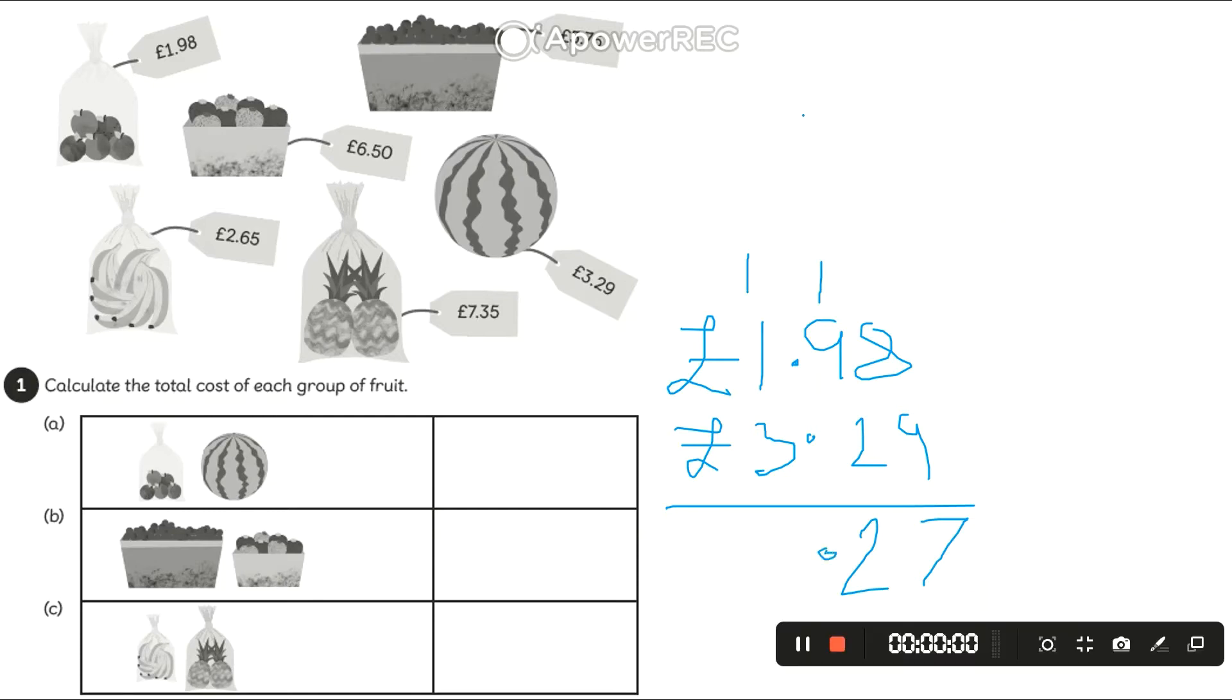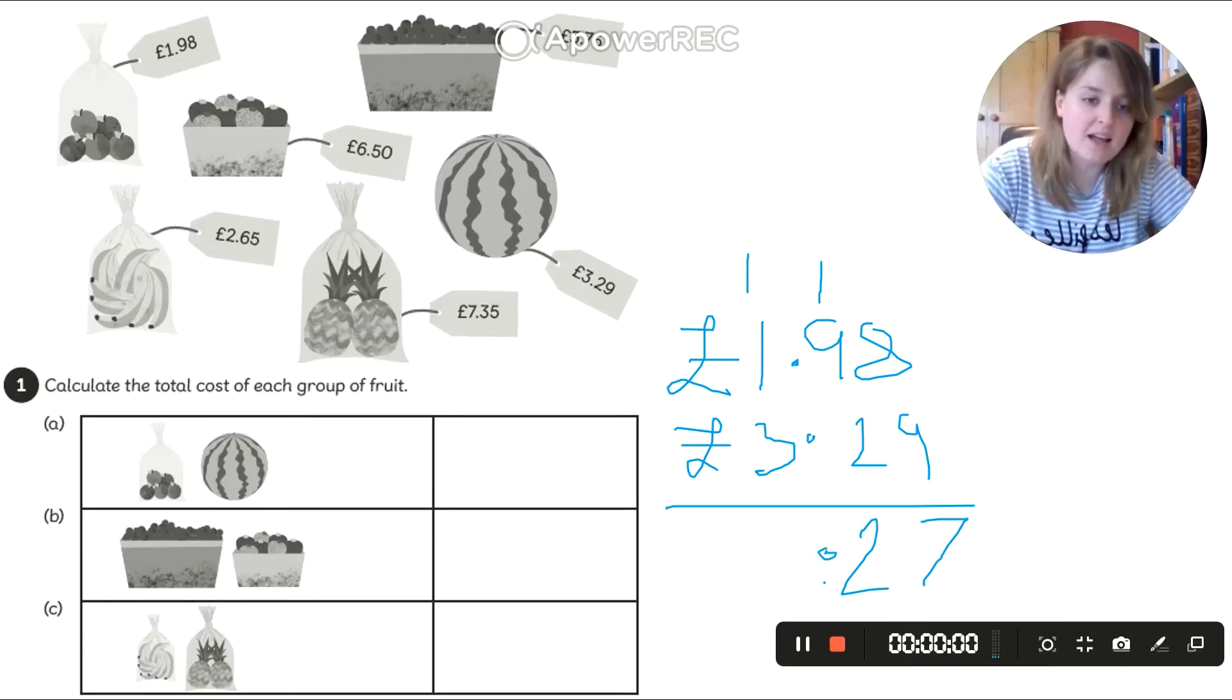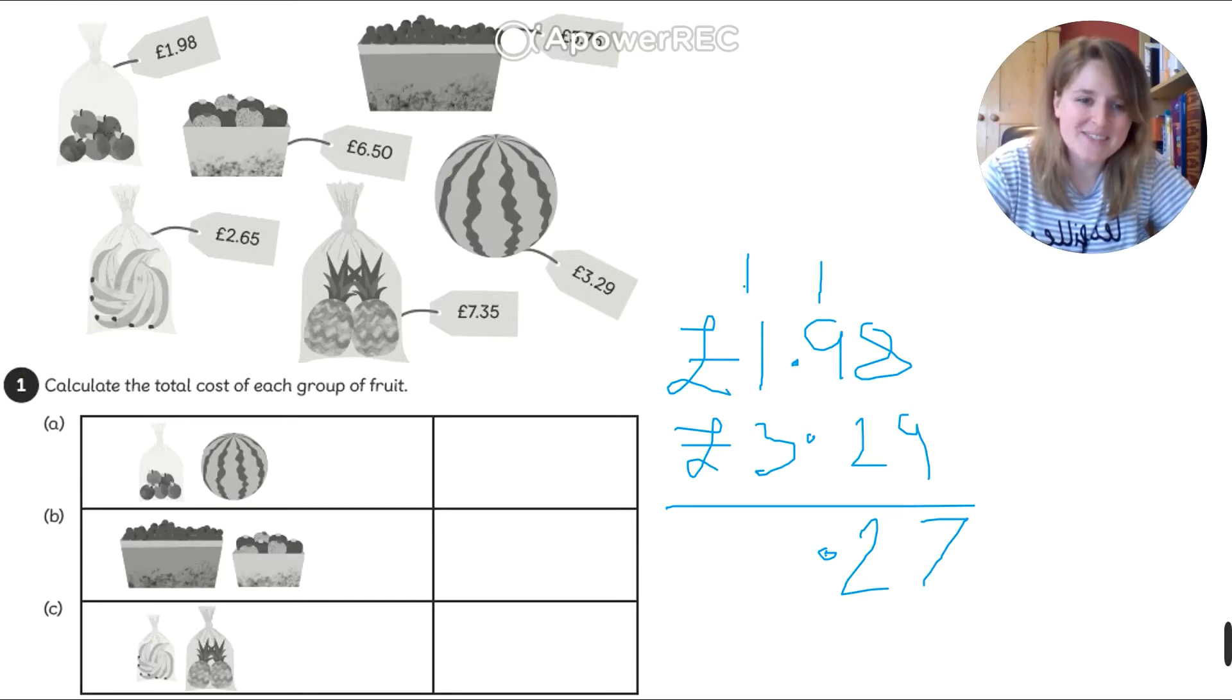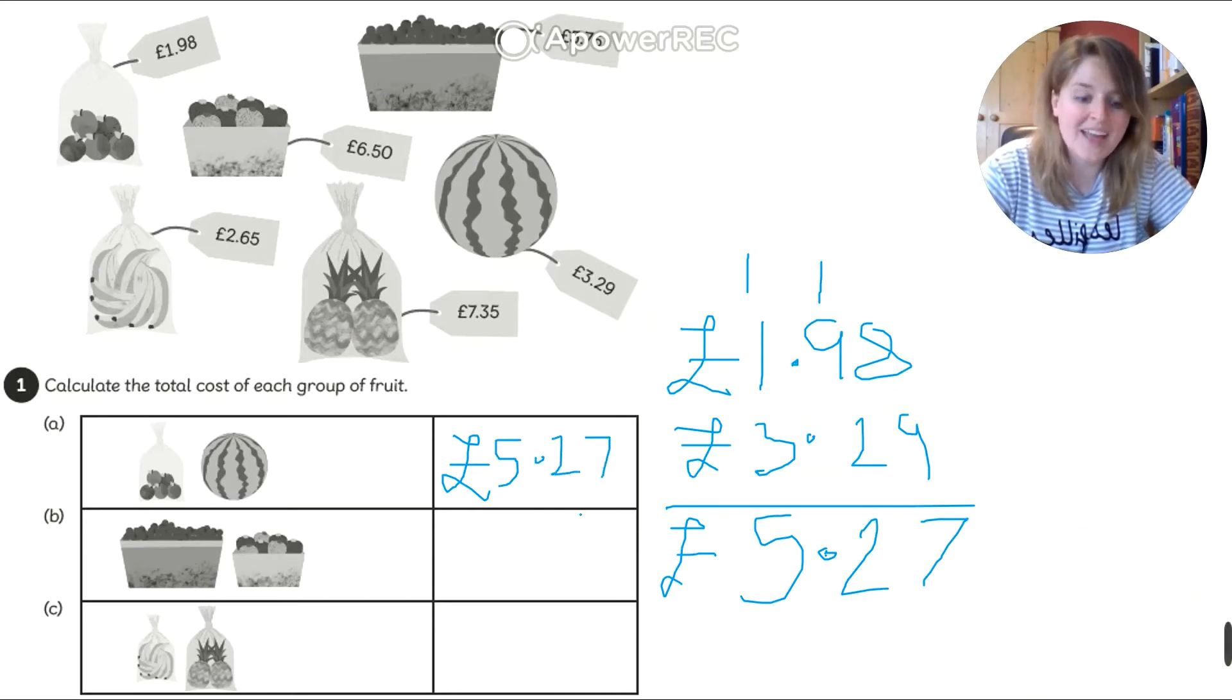So my 2 goes here and my 1 carries over. Don't forget the line up. Don't want a watermelon and an apple that's going to cost me over £100. So now I need to add up these ones. 1 and 1 is 2. 2 and 3 is 5. Don't forget my pound sign. So in here I can put that my watermelon and my apple cost £5.27. OK.